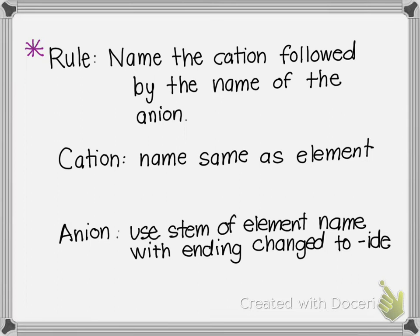So if I'm looking at this rule that I wrote, name the cation followed by the name of the anion, then I would think, okay, well, how do I name the cation? And here it is. So the cation is named the same as the element. So another way to say it is because metals are named the same as their element name.